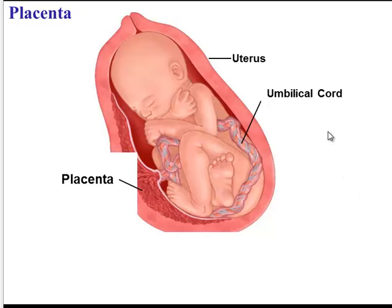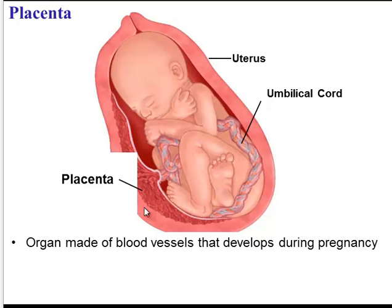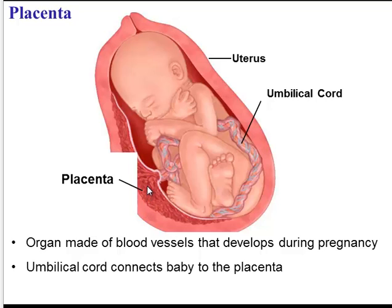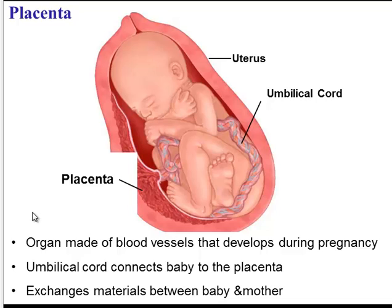Now, let's say that a female does become pregnant. In the uterus, another important structure develops, known as the placenta. The placenta is an organ made primarily of blood vessels, and those blood vessels are connected to the baby via the umbilical cord. Here's the uterus, here's the placenta, here's the baby's umbilical cord. The job of the placenta is to exchange materials between the baby and the mother — for example, the mother takes in nutrients and oxygen for the baby, which move through the placenta's blood vessels into the umbilical cord and then into the baby.